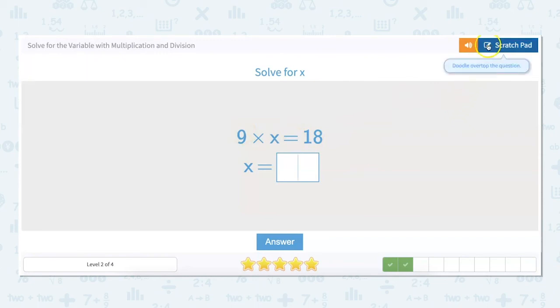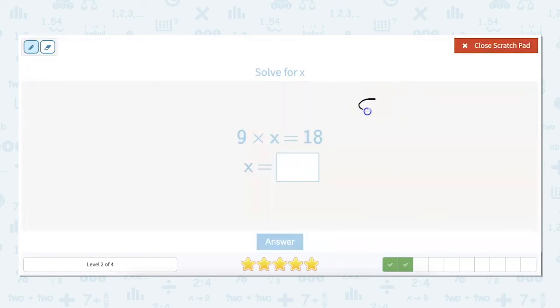9 times x equals 18. So for this one we have to do it a little bit differently. It adds another step to it. We need to get x by itself again. So to do that we got to get rid of our 9 here or turn it into 1. So to do that we're going to divide by 9. And since we do that over here we need to also do that over here. And x then equals 18 divided by 9 is 2.